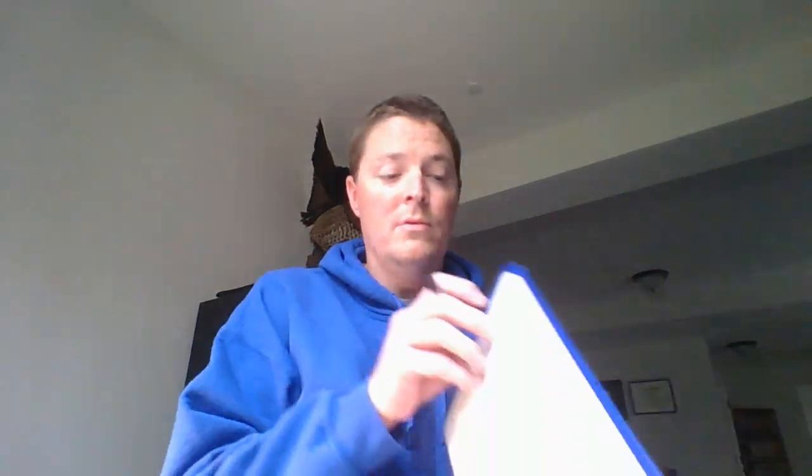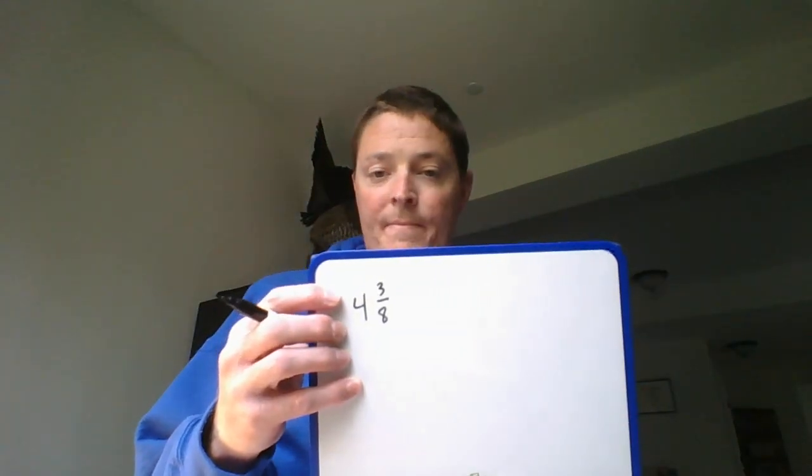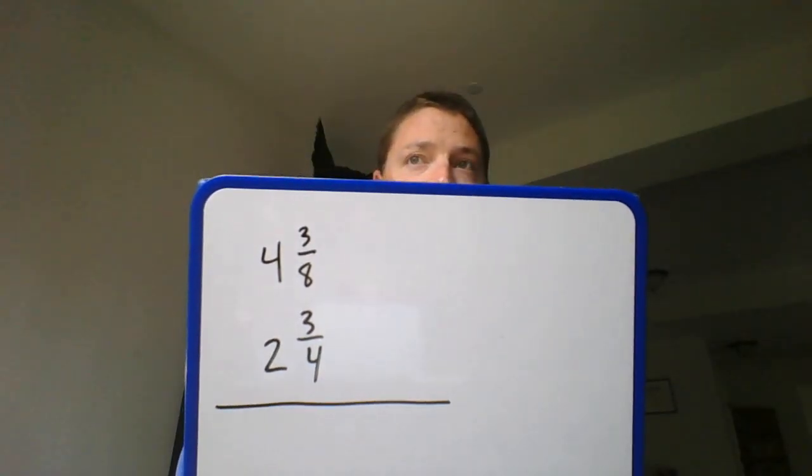And part B says the water in the third pool is two and three-fourths feet deeper than the second pool. What is the total depth? Okay, so our second pool is that four and three-eighths right there. It says that the third pool is two and three-fourths feet deeper. So there are your two depths right there.